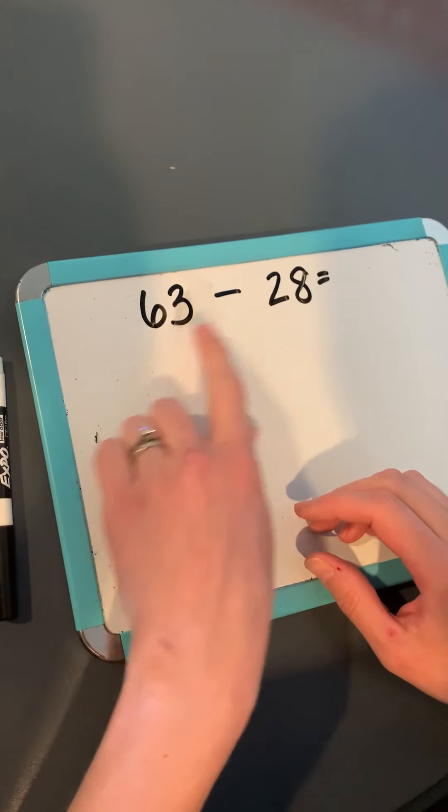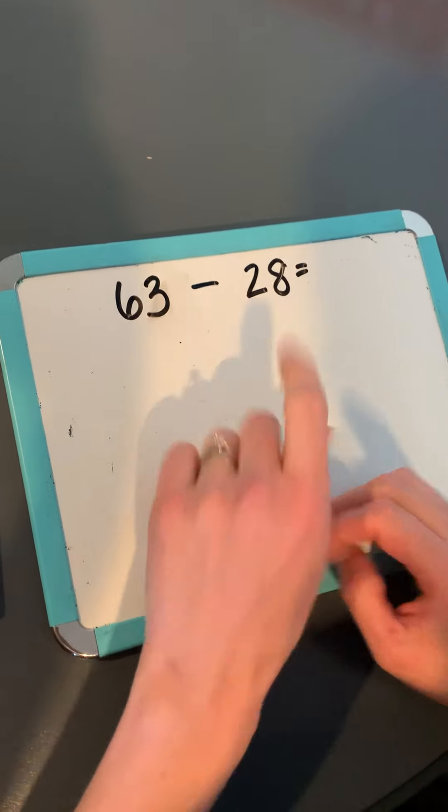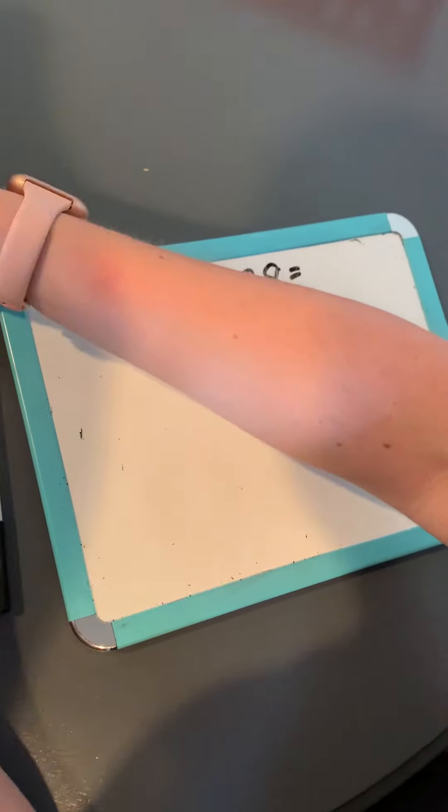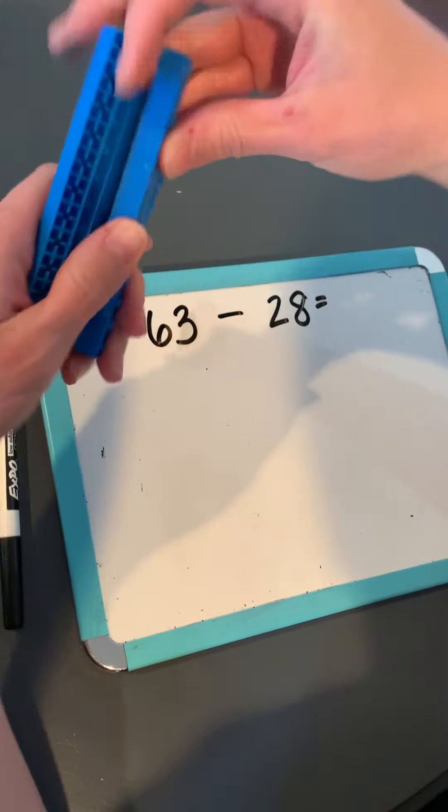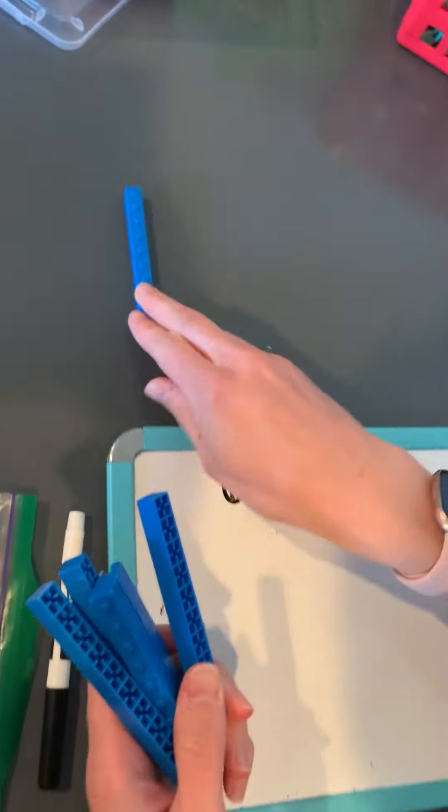We're going to start with 63 subtract 28 is our question. We're going to build 63. So I'm going to start with my base 10 blocks, my rods.